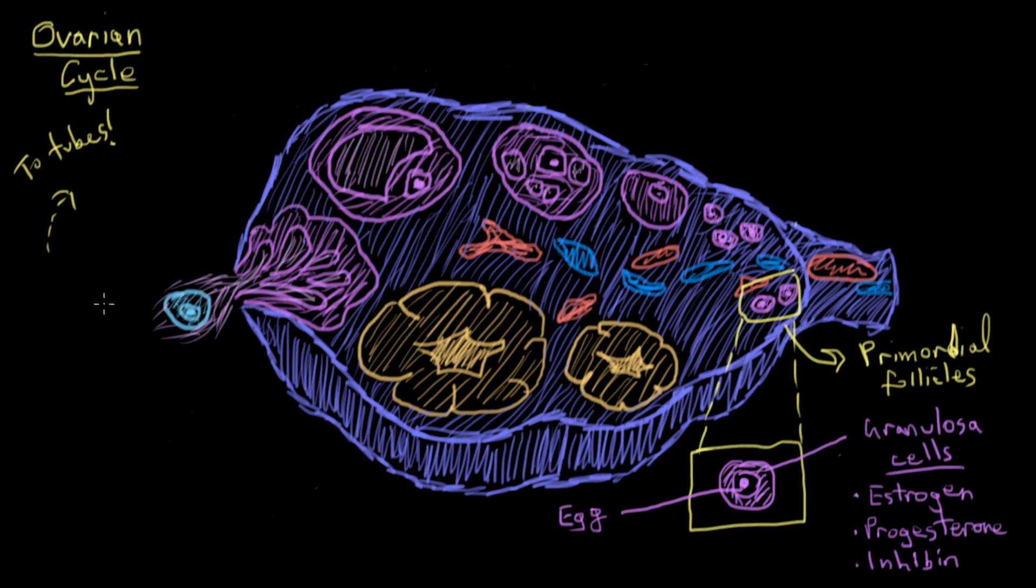So let's put a timeline on this. Now the ovarian cycle lasts 28 days. This is day 0 here at the primordial follicle, and we're going counterclockwise. All the way over here, this is day 13.